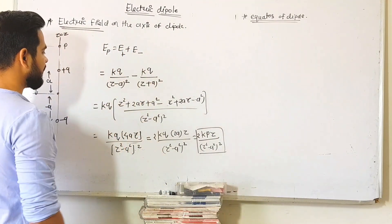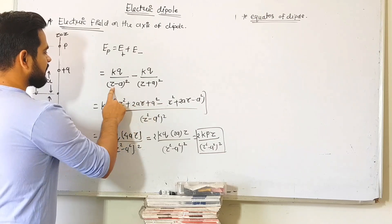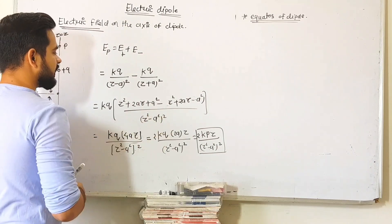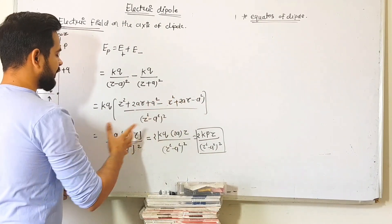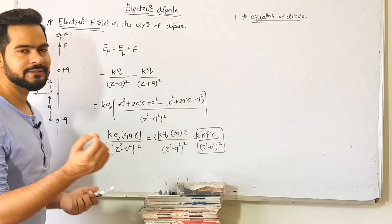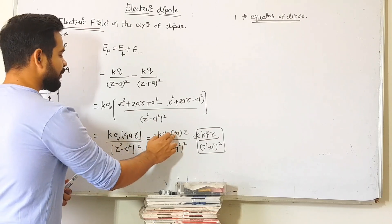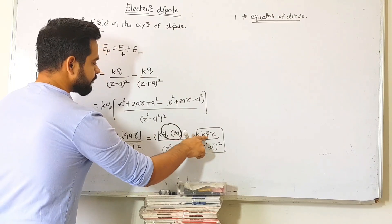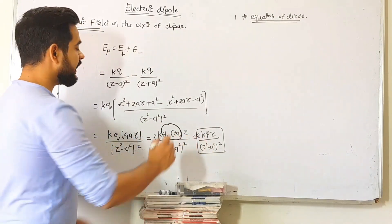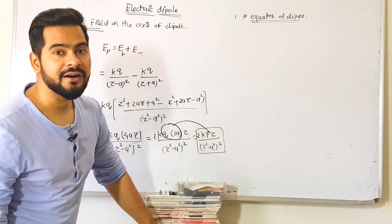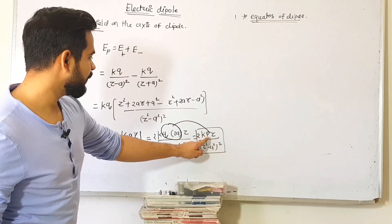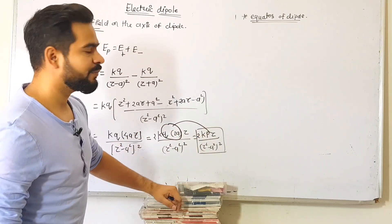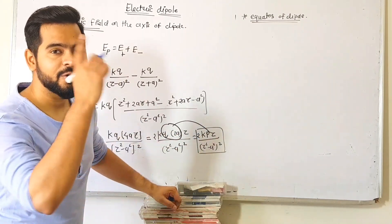Taking kq as common, the net field on the axis becomes kq × [1/(z−a)² − 1/(z+a)²]. Simplifying using algebra: the numerator becomes 4az and denominator (z²−a²)². Since dipole moment p = q × 2a, we substitute to get E_axis = 2kpz / (z²−a²)². This is the electric field on the axis of the dipole — a very important equation. Adding the unit vector z-hat gives the vector form.